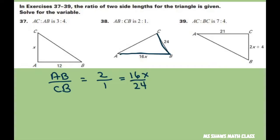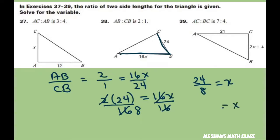So I'm going to cross multiply. So you get 2 times 24 equals 16X. And then I'm going to divide both sides by 16. 2 goes into 16 eight times. So you get 24 divided by 8 equals X. Therefore, X equals 3.